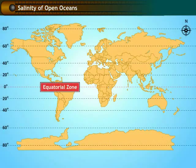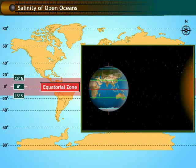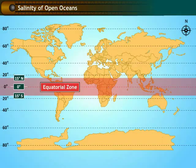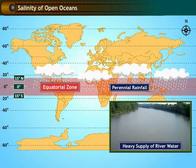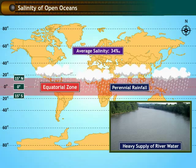The equatorial region is located between 0 and 15 degrees north and south of the equator. This region receives direct sunlight, thus having high solar energy. It also receives heavy rainfall throughout the year, with many rivers that flow into the ocean. The average salinity in the equatorial region is 34 parts per thousand.